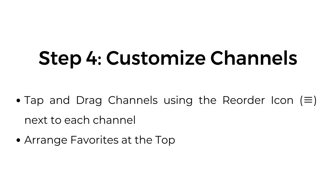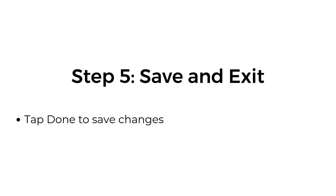Step number four, customize channels. Tap and drag channels using the reorder icon next to each channel. Arrange favorites at the top. Step number five, save and exit. Tap done to save changes.